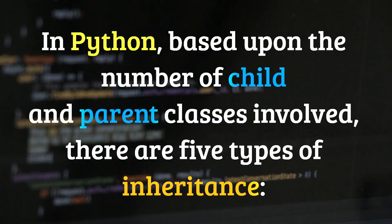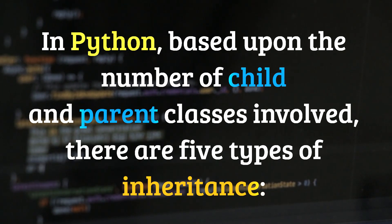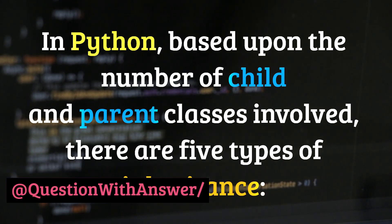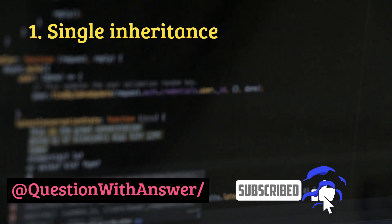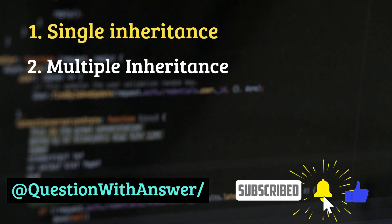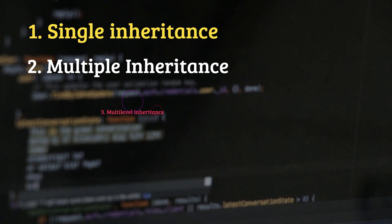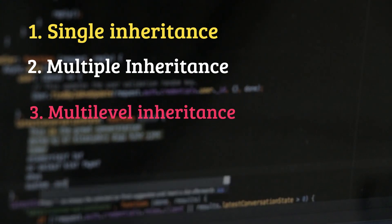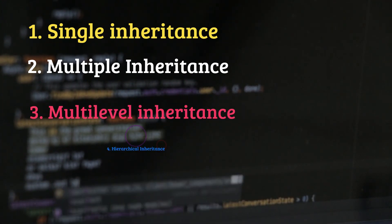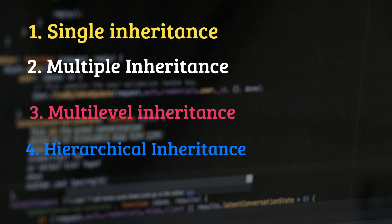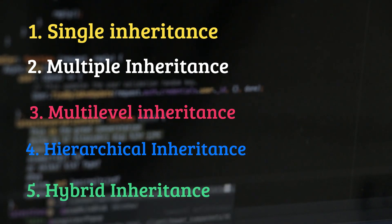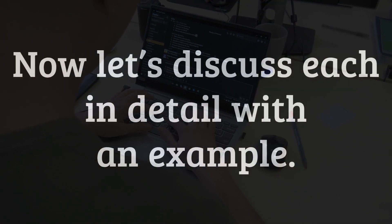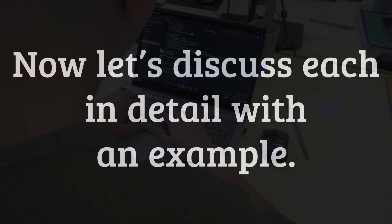In Python, based upon the number of child and parent classes involved, there are five types of inheritance: 1. Single inheritance, 2. Multiple inheritance, 3. Multilevel inheritance, 4. Hierarchical inheritance, 5. Hybrid inheritance. Now let's discuss each in detail with an example.